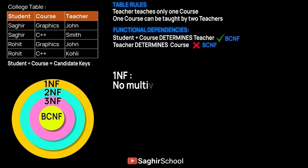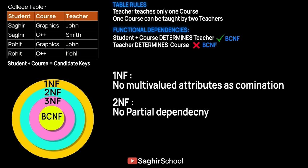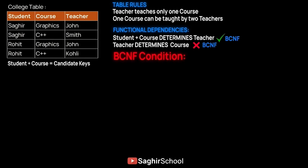We also verify the other normal forms. The table has no multi-valued attributes as a combination of primary keys, so it satisfies First Normal Form. There is no partial dependency since the non-prime key depends on both Course and Student, satisfying Second Normal Form. There is only one non-prime attribute, so there is no transitive dependency and Third Normal Form is also satisfied.